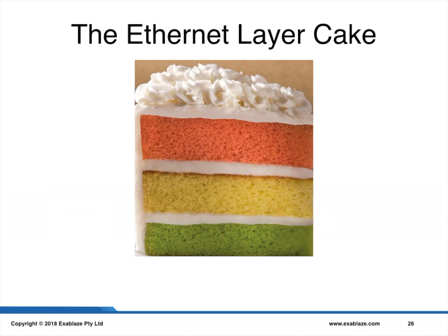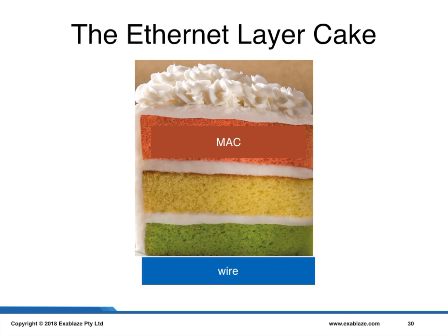To understand the Ethernet MAC a little bit more, we're going to need to understand the various layers of how it goes together. I'm going to use the Ethernet layer cake as my running example. At the top layer, we have the Ethernet MAC that we've discussed so far, and at the very bottom layer we have the wire or the fiber, in which we wiggle electrons or photons to move data.